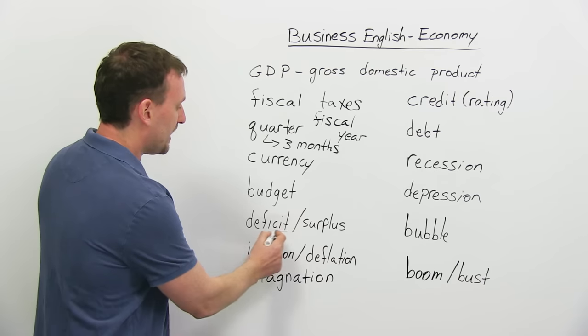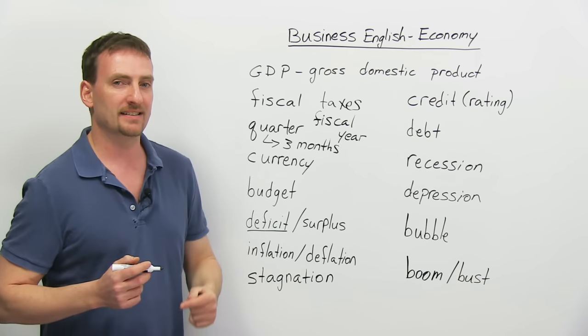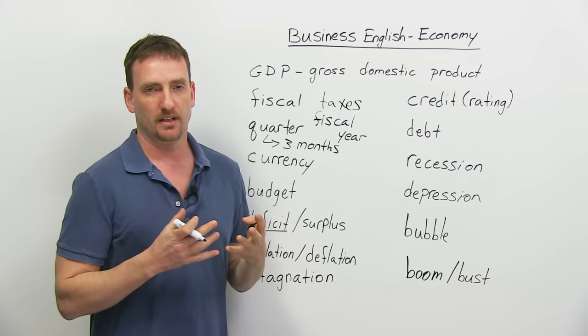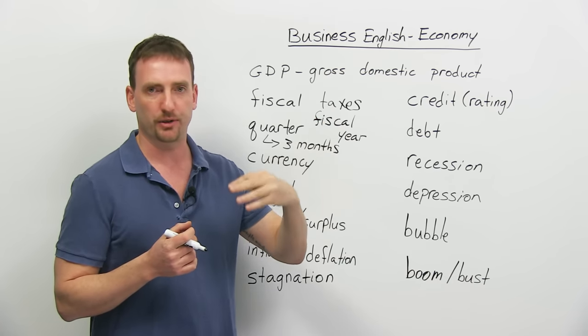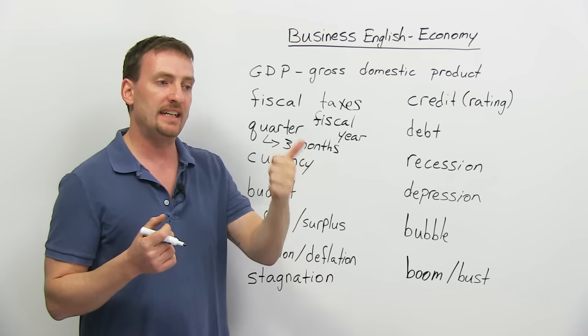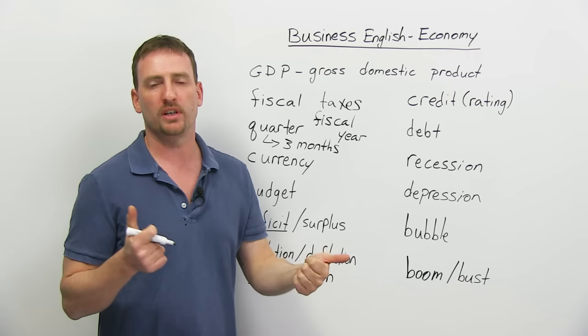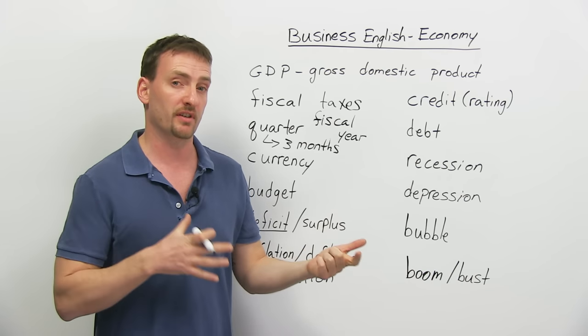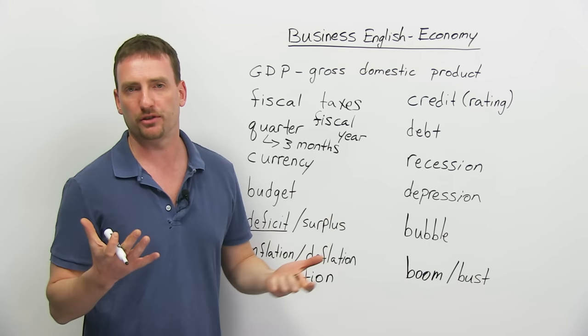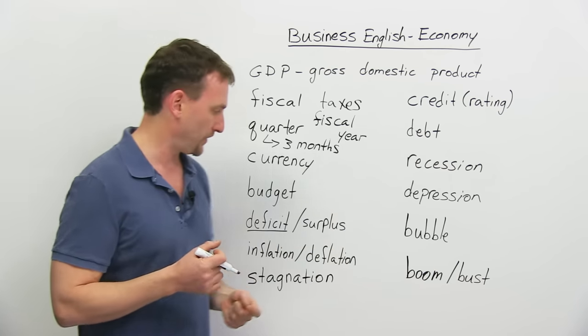If they are running on a deficit, that means that they need to spend more money than they have. They have to spend on things to run the country, but they don't have. So if I need to spend a million dollars, but the revenues of the country are only $900,000, then they will run on a $100,000 deficit.